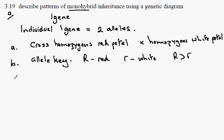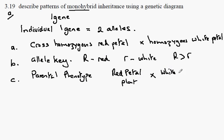We start off looking at the parental phenotype. And we're going to write down that we're going to cross a red petal plant. We're going to cross that with a white petal plant.